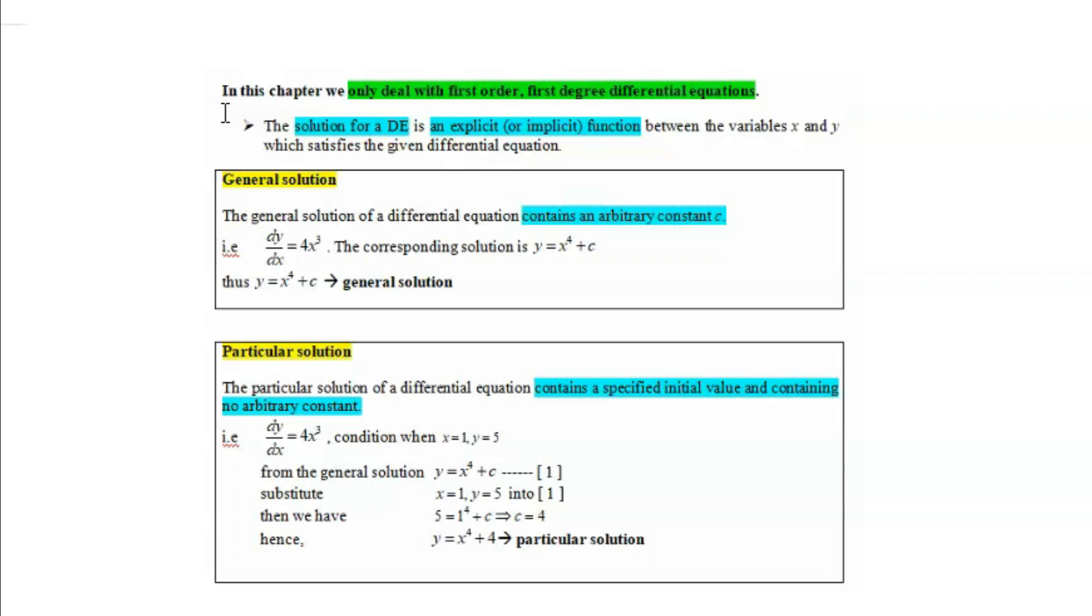if we have dy over dx equals 4x cubed, for this differential equation, we provide a specified condition where we say x equals 1 and y equals 5. So from the general solution obtained earlier, y equals x to the power of 4 plus c,